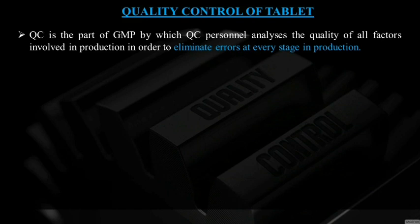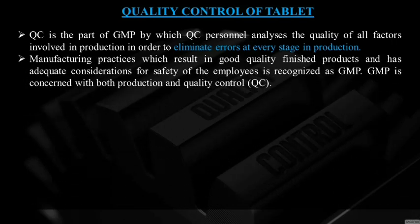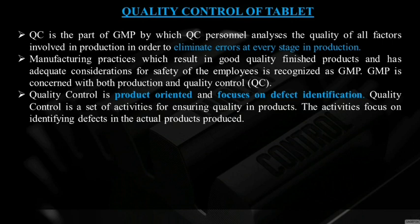Quality control of tablets — quality control is part of GMP, by which quality control personnel analyze the quality of all factors involved in production in order to eliminate errors at every stage. Quality control mainly deals with the identification of defects or errors and eliminating them. GMP — Good Manufacturing Practices — results in good quality finished products and has adequate consideration for the safety of employees. GMP is concerned with both production and quality control. Quality control is product-oriented and focuses on defect identification.